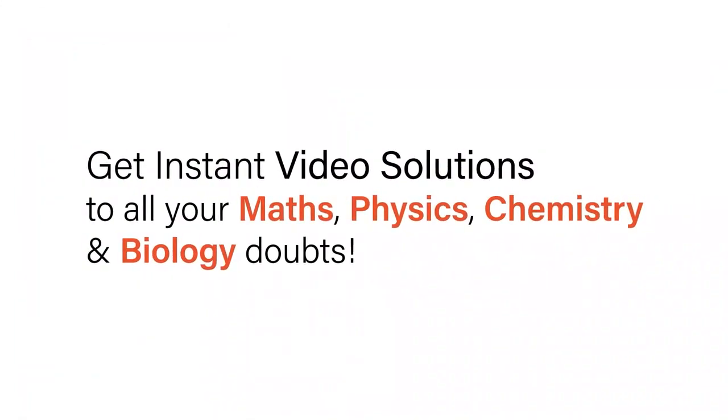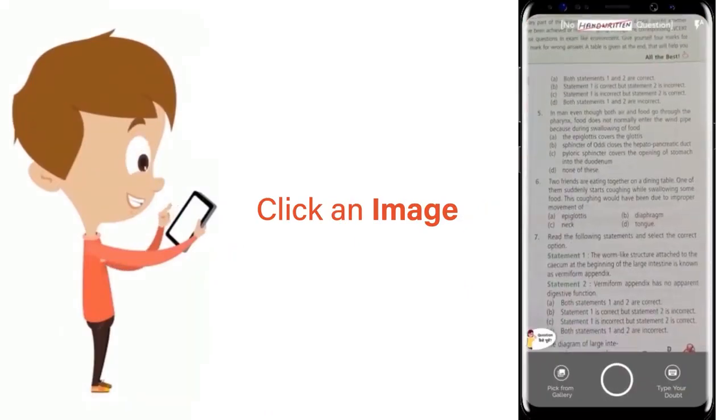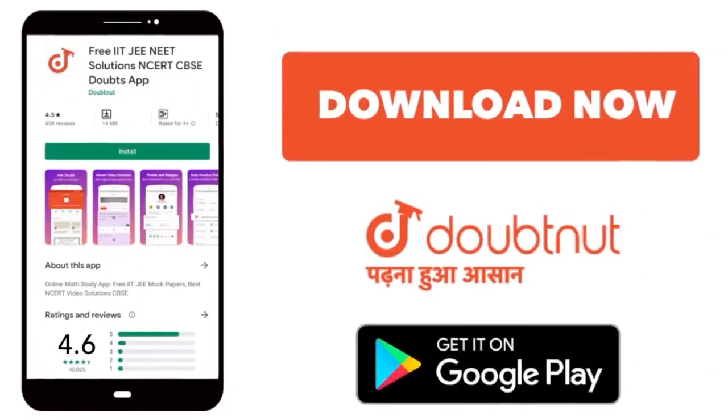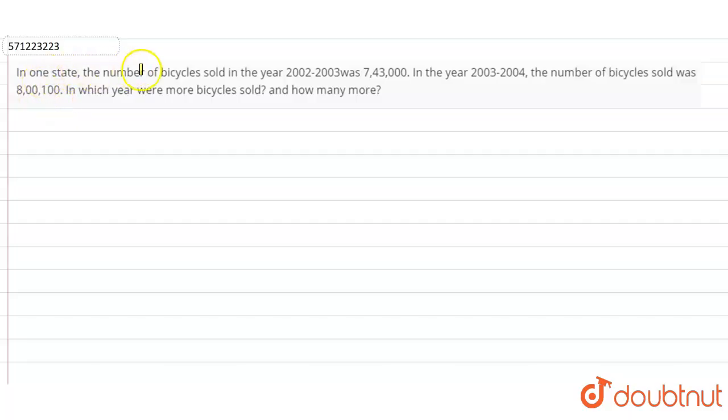With Doubtnet, get instant video solutions to all your maths, physics, chemistry, and biology doubts. Just click the image of the question, crop the question, and get instant video solution. Download Doubtnet app today. The question is: in one state